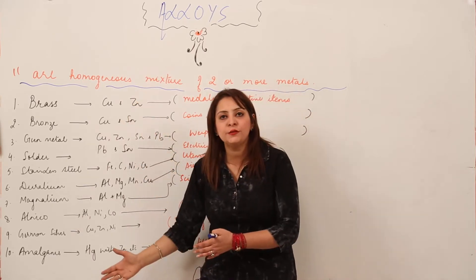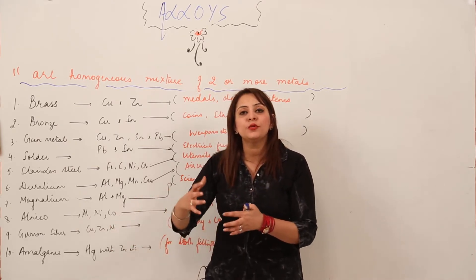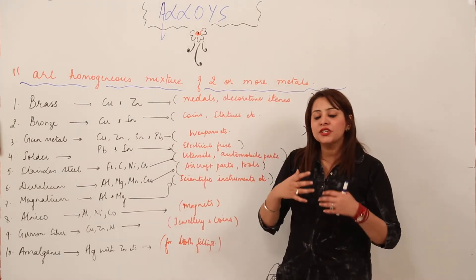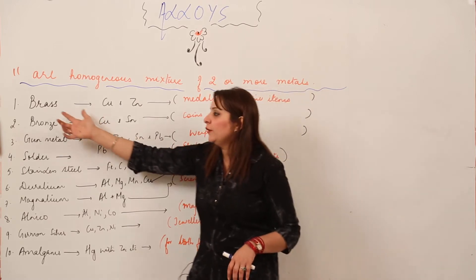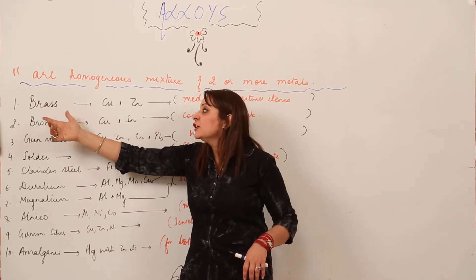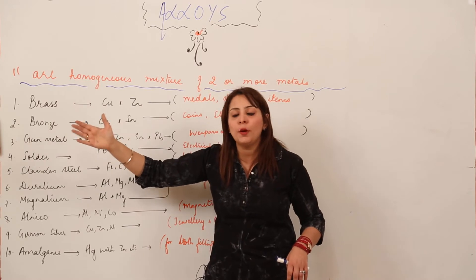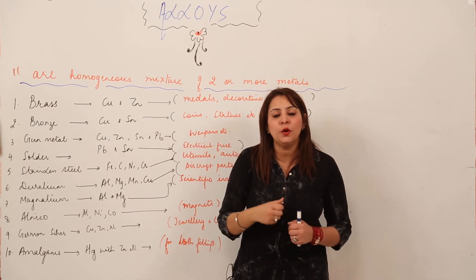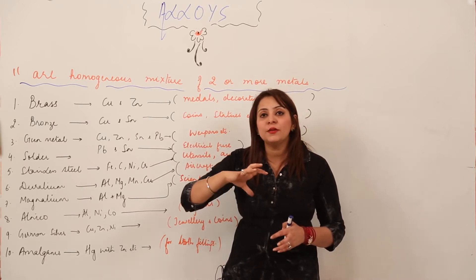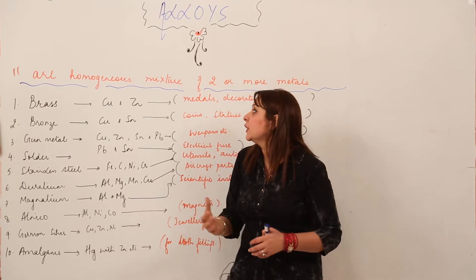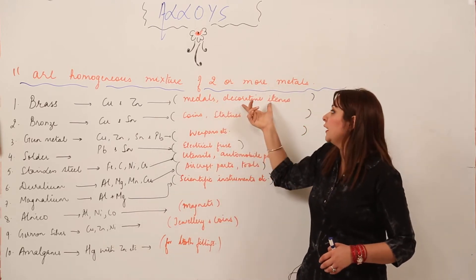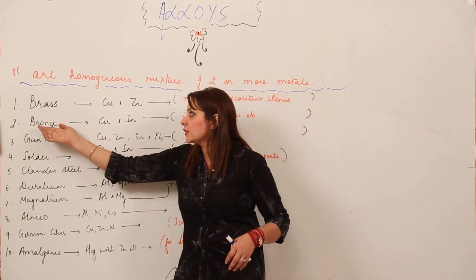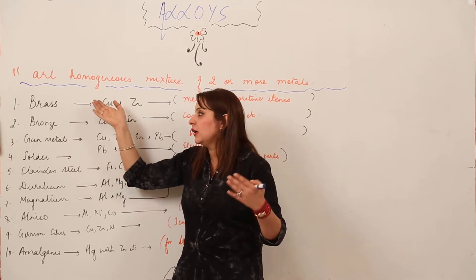I have a list of alloys we'll be discussing, along with their improved properties and uses. The first alloy is brass. Brass is mainly an alloy of copper, in which copper is mixed with zinc. After mixing copper with zinc we call it brass. It is used for making medals, decorative items, and many other things.